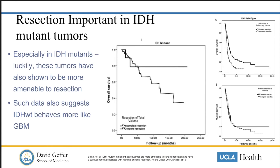In this particular study, the same molecular analysis comparing extent of resection shows that IDH wild-type tumors behave a little more like glioblastoma in terms of outcome. But even so, image-complete resection was still shown to confer a survival benefit.